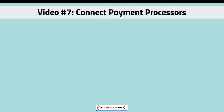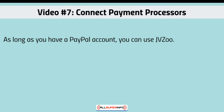Welcome to video number seven, which is about connecting your payment processors. As long as you have a PayPal account, you can use JVZoo with it. With PayPal, you can do a number of things: when payments come in, if you have a partner, you can split that payment between you and your partner. If a refund happens, the money will be pulled out, or if you have an affiliate, you can do instant payments where the money will be split and paid out.